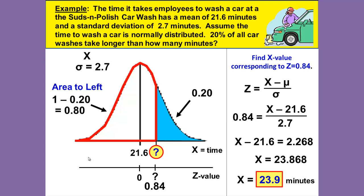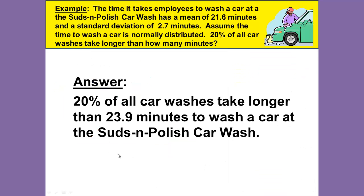We will round this to 23.9. Please follow your teacher's rounding rules for rounding your final answer. And so our answer is 20% of all car washes take longer than 23.9 minutes to wash a car at the Suds and Polish Car Wash.